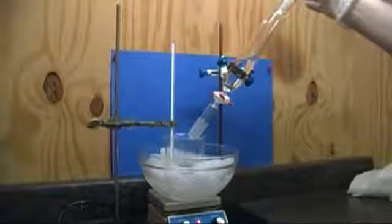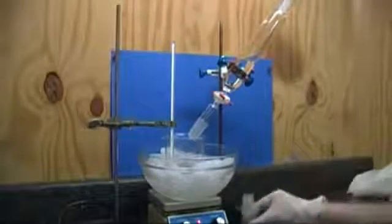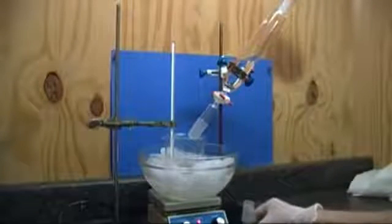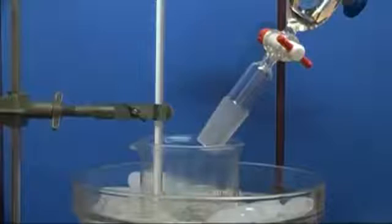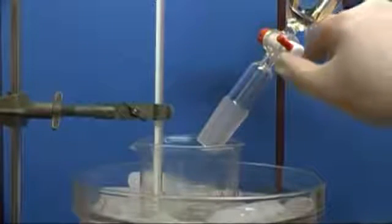Also add a thermometer to keep track of the temp. We do not want the temperature to exceed 50 degrees C or we will start to get side reactions that we do not want. I set my drip rate so that the temperature did not go over 40 degrees C.